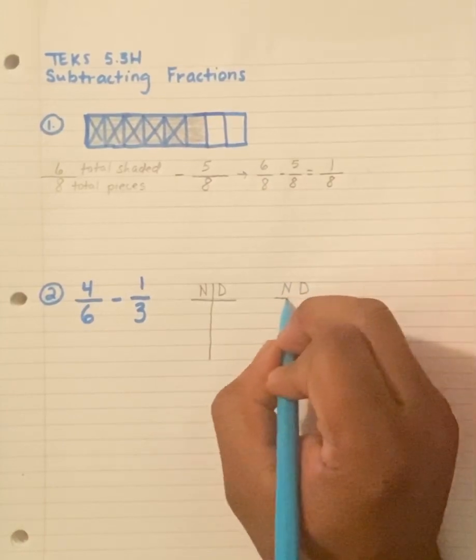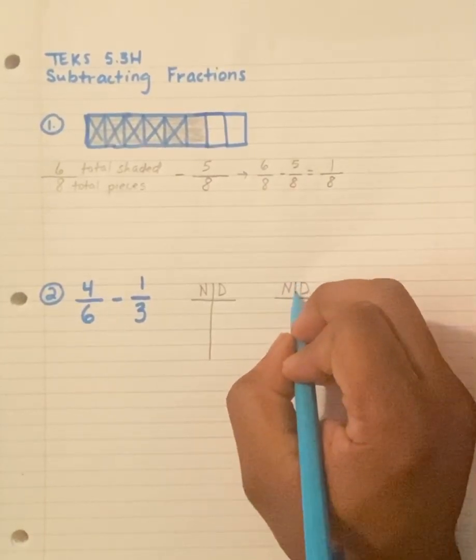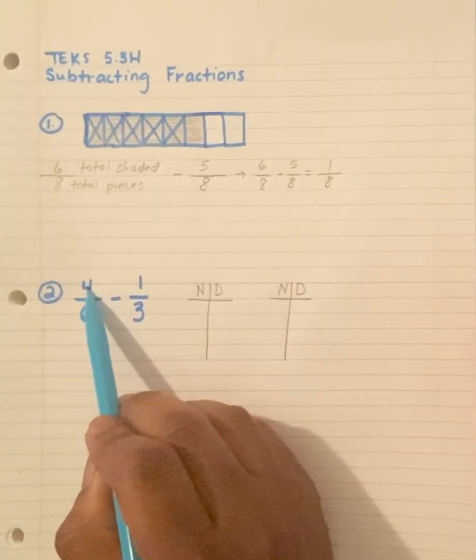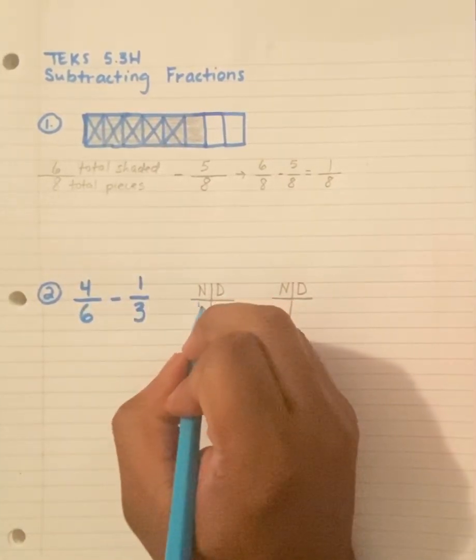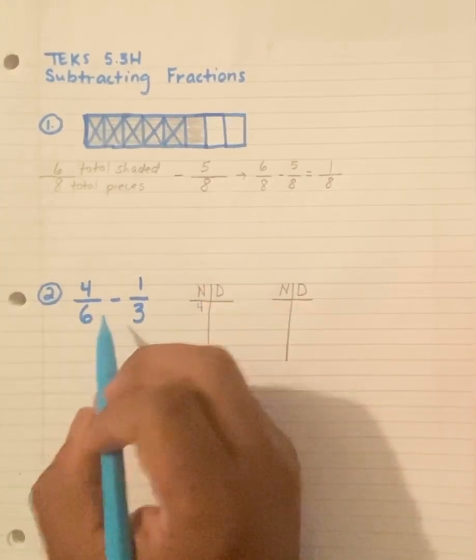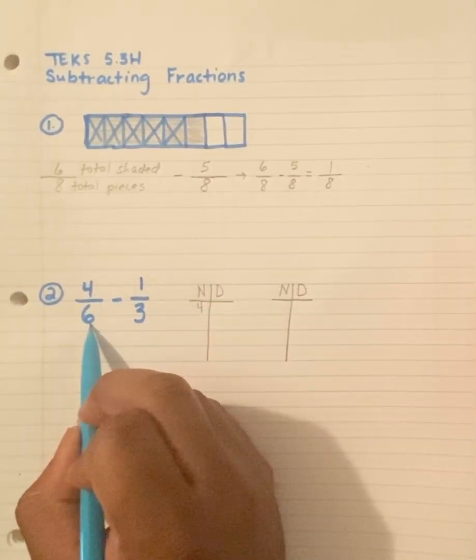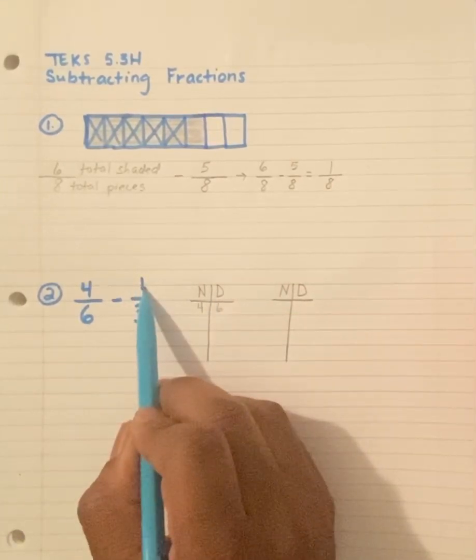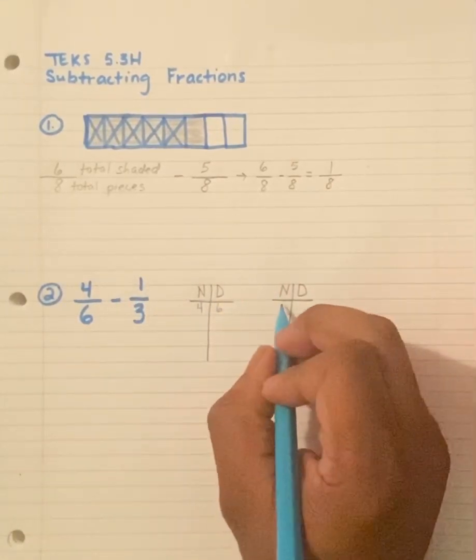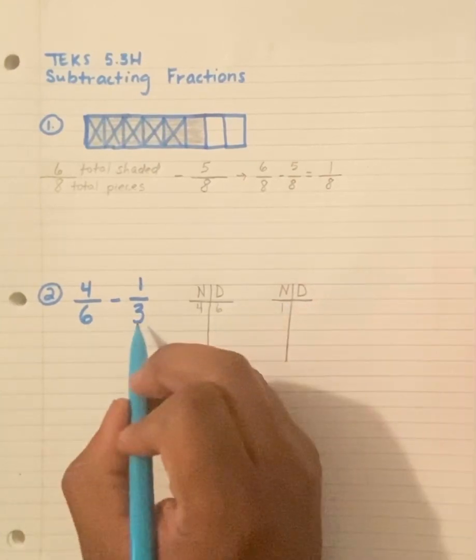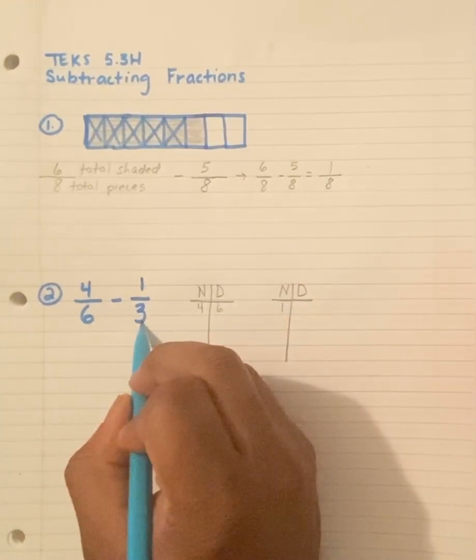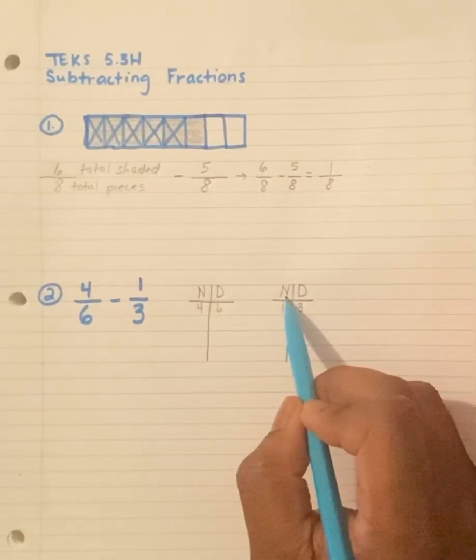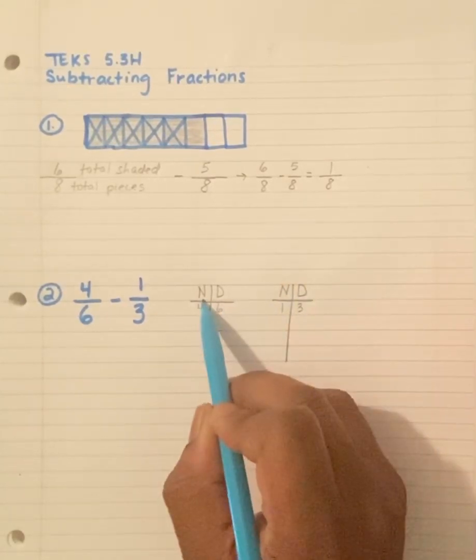And my goal is to locate the common denominator. My numerator is 4, so I'll write 4 here under the numerator. 6 is my denominator, so I'll write 6 here. 1 is my numerator, so I'll write 1 here. 3 is my denominator, so I'll write 3 here. Remember, numerator, numerator, denominator.